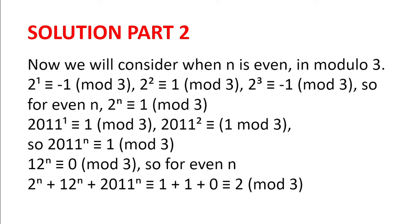for even n, 2 to the power of n plus 12 to the power of n plus 2011 to the power of n is 1 plus 1 plus 0, which is 2 modulo 3.